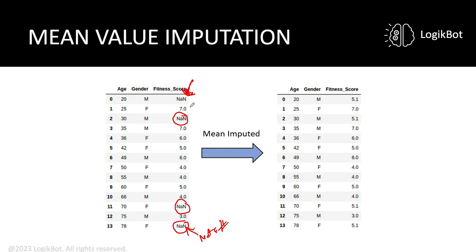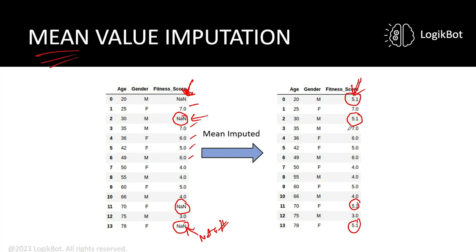Whatever feature has NaN values, we simply add up all the values, divide by the total number, and then fill the NaN spots with that mean value. That's all mean value imputation is. Here is the mean value for that feature, and everywhere there's a NaN value, we've inserted the average. It's important to understand that knowing what 'mean' is in statistics isn't enough — you need to know how to apply statistical techniques to your data. This feature — this fitness score — is now model ready.